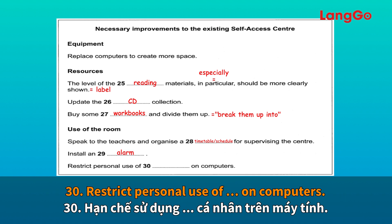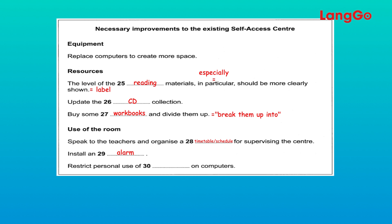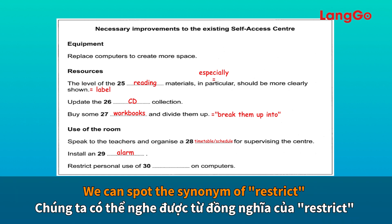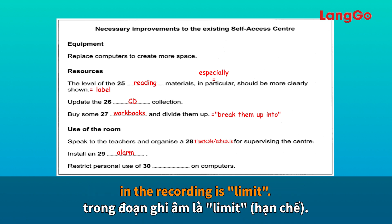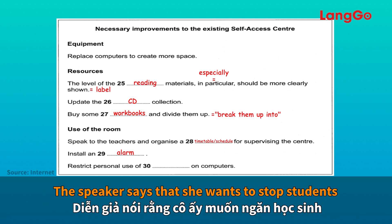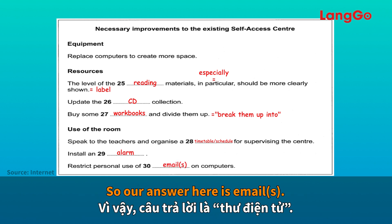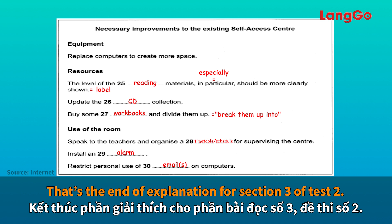Number 30: restrict personal use of computers — the other thing she'd like to do is talk to the technicians and see whether they could somehow limit the access to email; she really doesn't want to see that resource misused. The synonym for 'restrict' in the recording is 'limit.' The speaker wants to stop students using emails to avoid resources being misused, so the answer is 'email' or 'emails.'